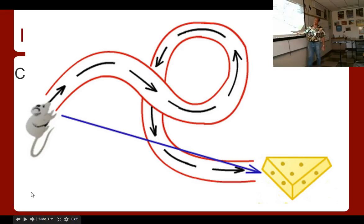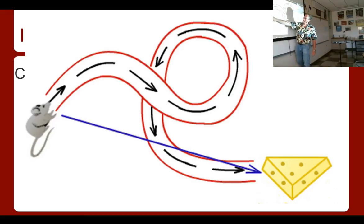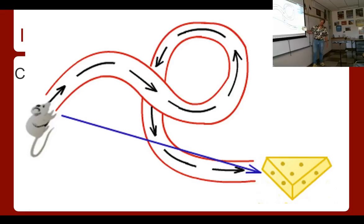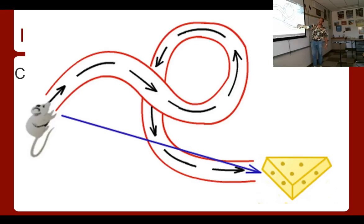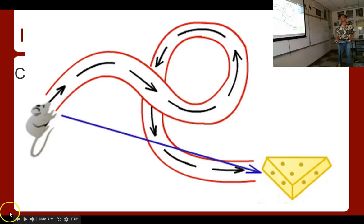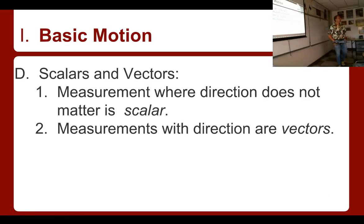Here's an example: if you set a mouse on a course with cheese on the other end, the mouse may wander all over the place before finding the cheese. The distance would be the full pathway of all those wandering black arrows, but the displacement would just be the straight line between the starting point and the ending point. That's distance versus displacement.